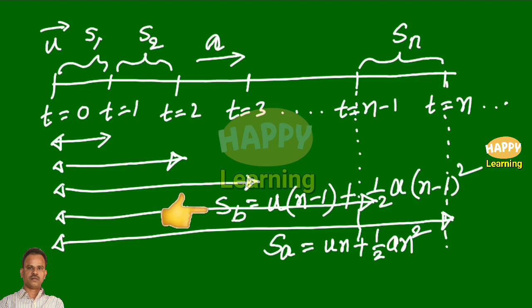Observe carefully. For the n seconds case, you substituted n in place of t. For the n minus one seconds case, you substituted n minus one in place of t. So, S equals u into n minus one plus half a into n minus one whole squared. Now we want Sn. This Sn is equal to Sa minus Sb.